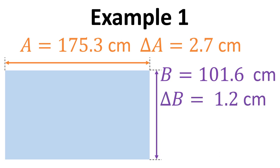And again we can write this down, this is equivalent. B equals 101.6 centimeters, delta B for the uncertainty in B is 1.2 centimeters.